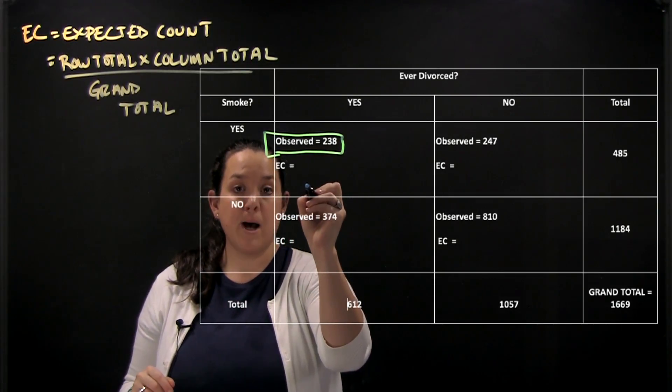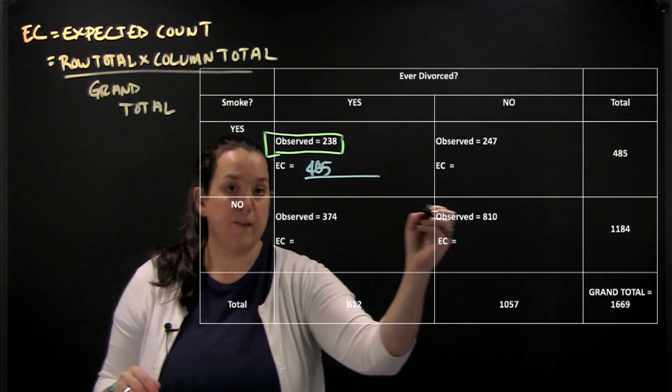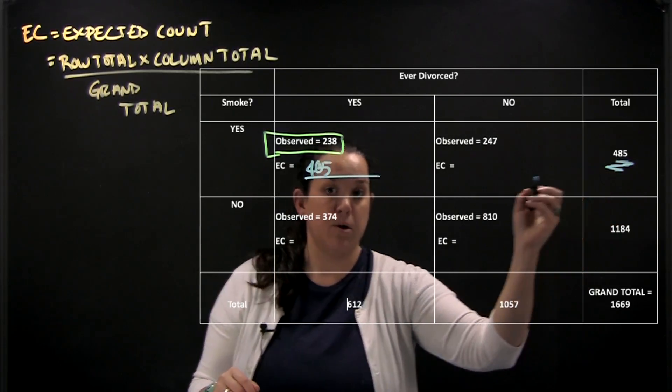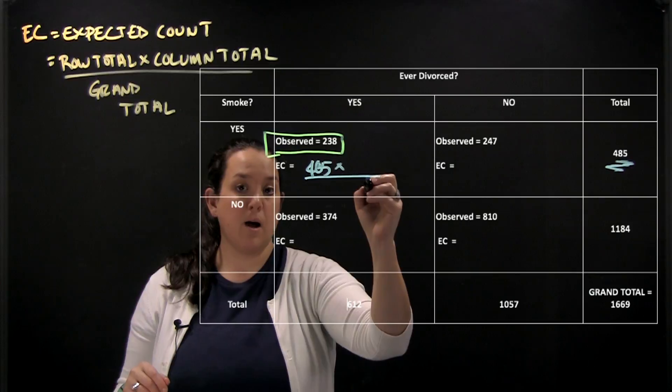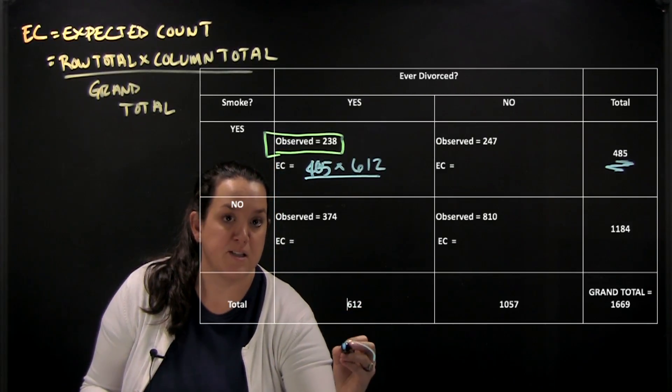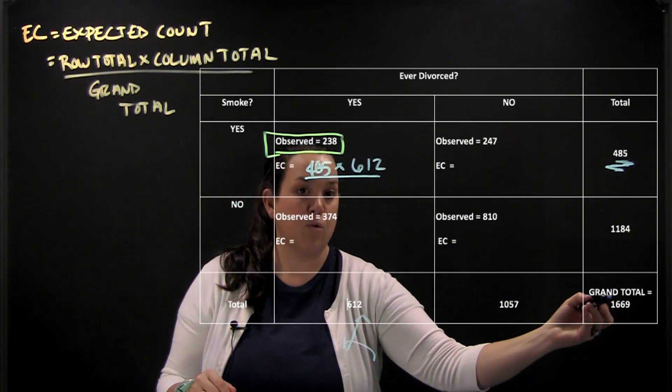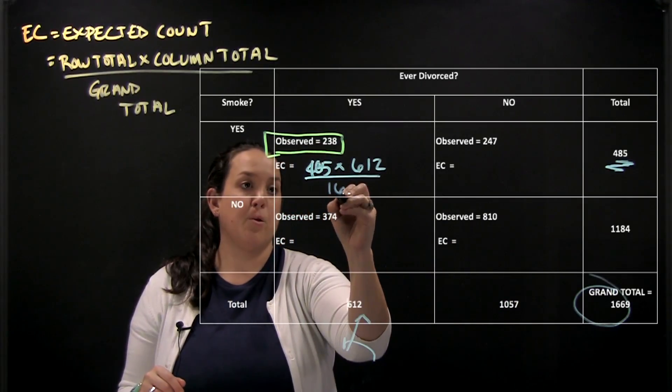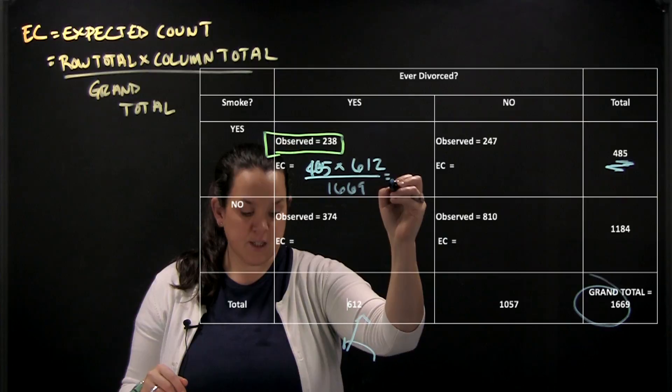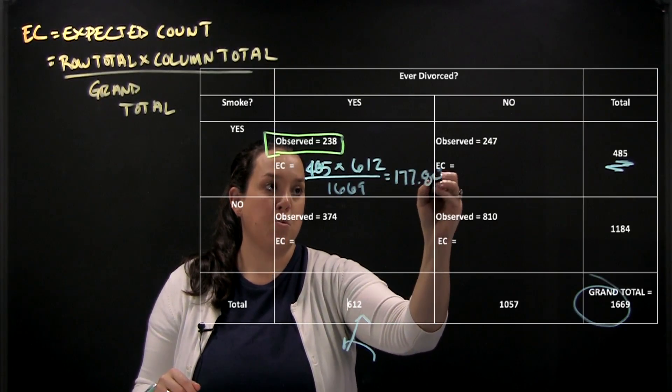So here my expected count will be based off of a row total of 485. So that's coming from this cell at the end of the table times a column total of 612. And that came from this section up here. And then we have a grand total represented in the lower right hand corner. So this would give us an expected count of 177.84.